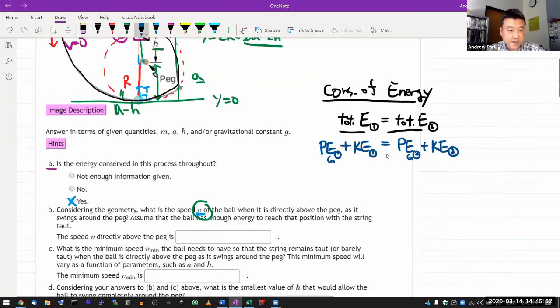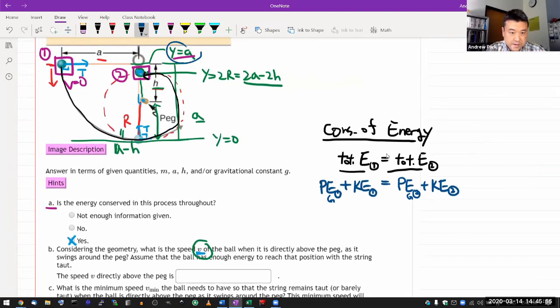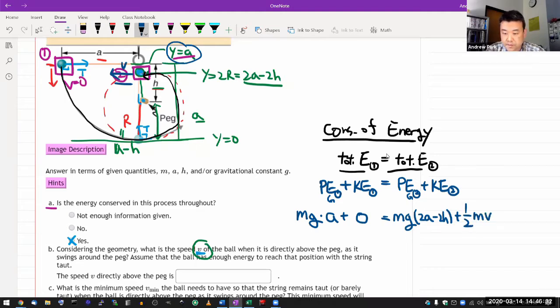The gravitational potential energy at snapshot one is where it's at height A. So the expression should be Mg times the height A, plus the kinetic energy, one half Mv squared, so that's zero. The speed at that position was zero. It's equal to the gravitational potential energy at snapshot two. So I have that height there. Mg, 2A minus 2H, plus the kinetic energy. Here, now I have some sense that it's moving with some speed of V. So one half Mv squared.